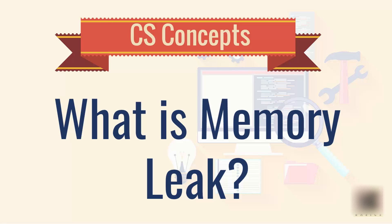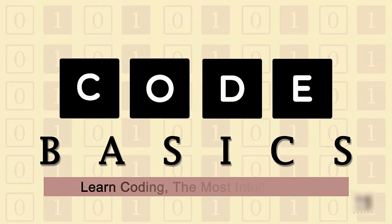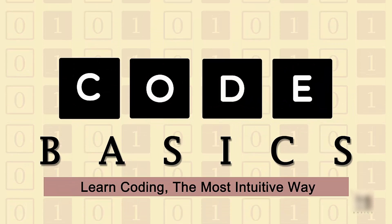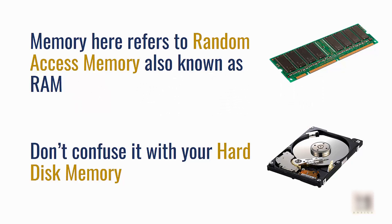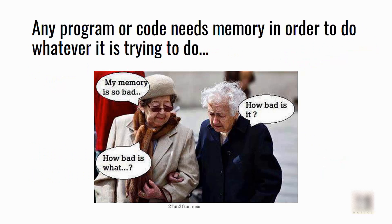That's called a water leak, but what is a memory leak when it comes to software and writing code? We are going to answer that question in this tutorial. First, let's clear some basics: when I say memory, I am referring to random access memory or RAM — not hard disk memory. Any program needs memory in order to do whatever it is trying to do; without memory, bad things would happen and your program would misbehave.